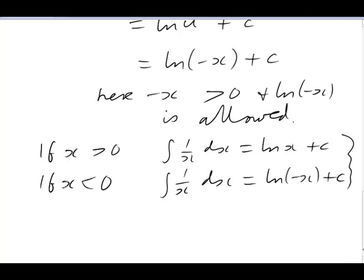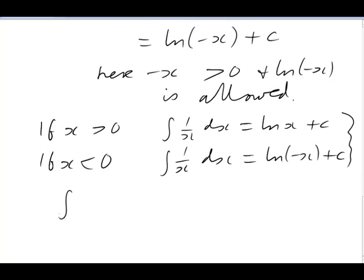They can be summed up in a single expression by saying integral 1 over x dx, regardless of sign, is just the log of the absolute value of x plus c. Because remember, if x is positive, the absolute value is just x. And if x is negative, the absolute value is negative x.